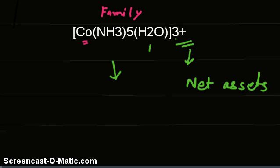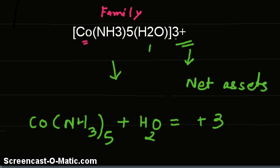So to begin with, rewrite the complex so that only H2O is separated. The contribution by Co(NH3)5 plus the contribution by H2O equals +3.